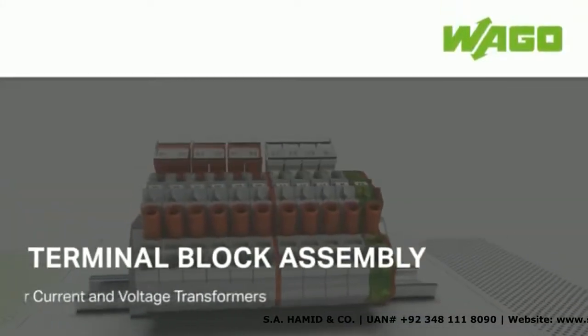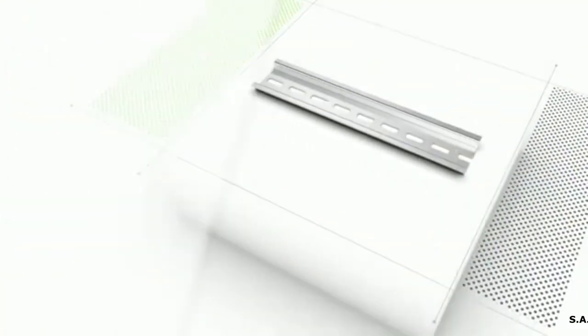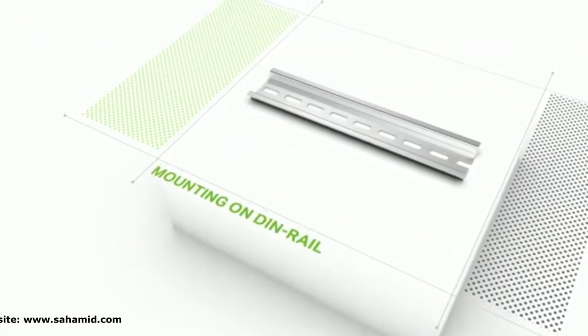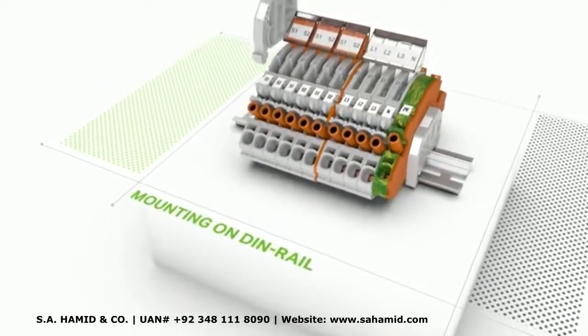Terminal Blocks for Current and Voltage Converters from Wago. The individual terminal blocks can be snapped onto the DIN rail side-by-side to form a block.